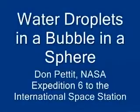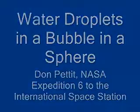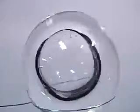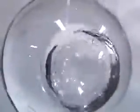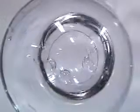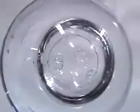Water droplets in a bubble in a sphere. Here we have a sphere of water, 75 millimeters in diameter, with an air bubble inside about 35 millimeters in diameter, and we inject water droplets anywhere from one to eight millimeters in diameter into the bubble, and look at the resulting collision dynamics, where they collide with each other and the walls.